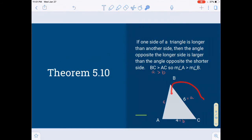So BC, or little letter a, is greater than AC, or little letter b.